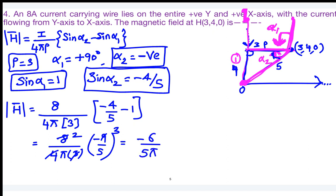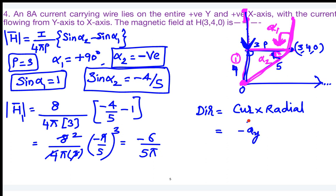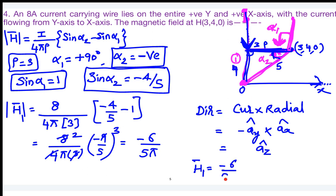The direction of H₁: current flows in the negative y direction (from +y-axis to origin), and the radial direction is positive x (source to observer). So â_y × â_x = −â_z, giving direction â_z. Therefore H₁ = −6/(5π) × â_z amperes per meter.